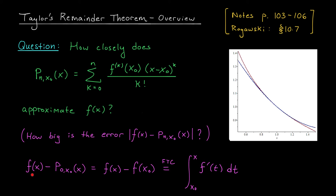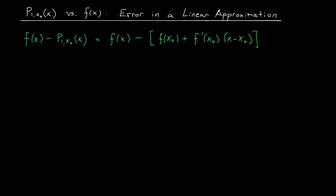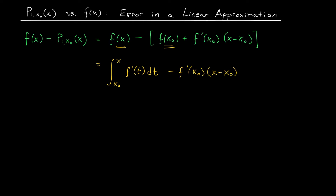We'll now show that the difference between f of x and its linear approximation, p1 x0, can be written in much the same form. The linear approximation can be written as f of x0 plus f prime x0 times x minus x0. If you look at this expression, you might see something familiar — we have the difference of f of x and f of x0, which is exactly the integral from x0 to x of f prime t dt. What's left over is minus f prime x0 times x minus x0. My goal is to rewrite this as a single term to make it as simple as possible.